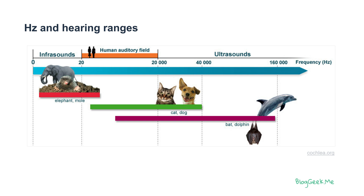This is less than what dogs can do, or elephants, or other animals, but this is simply what humans can do. Which means that in this auditory range is what you would usually get when you try to get audio, compress it, and send it over the wire to someone else. Because at the end of the day, we need humans to hear that, and not other animals.